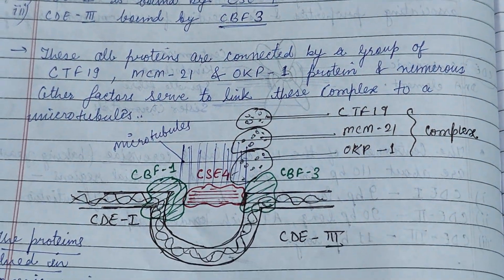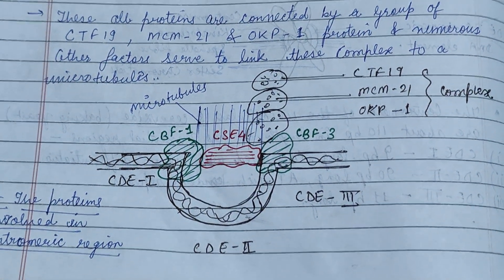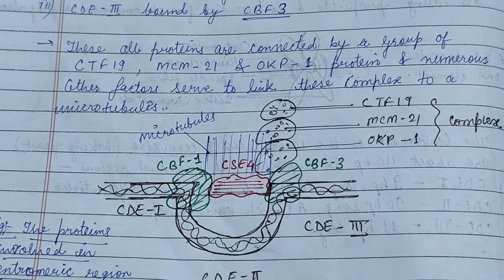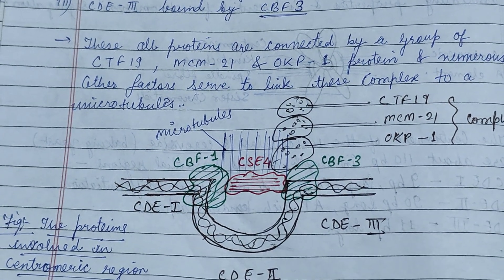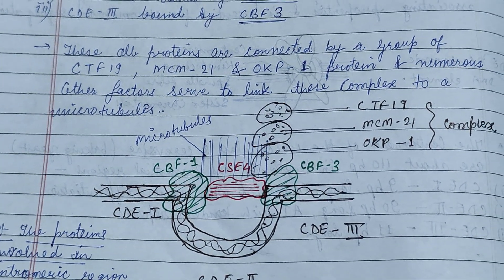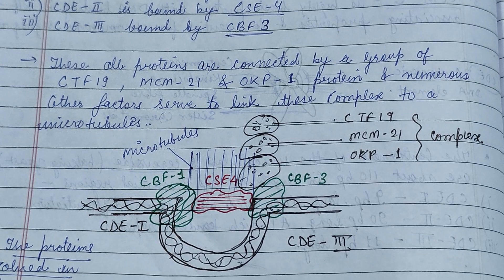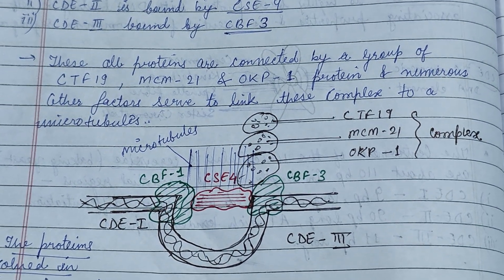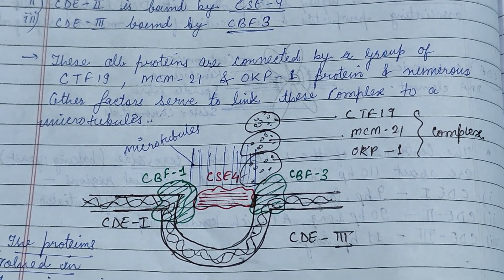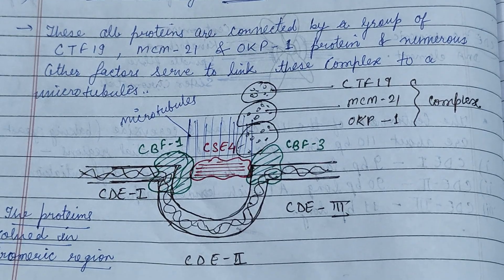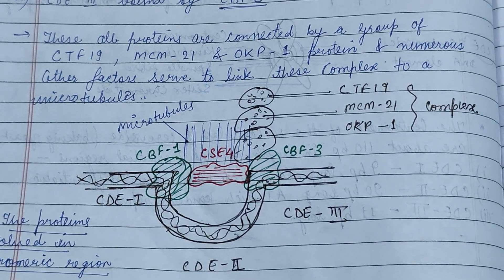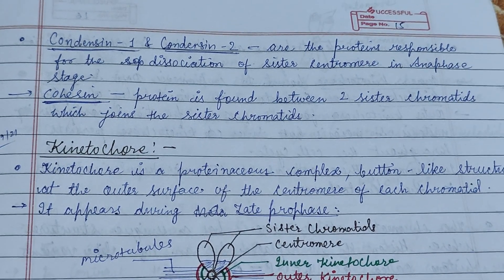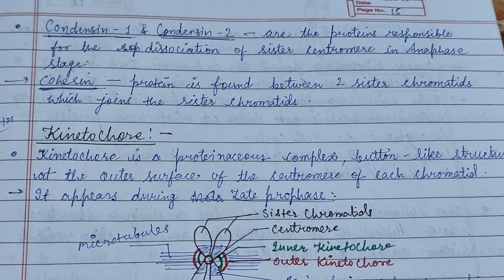The proteins involved in the centromeric regions include CDF19, MCM21, and OKP1, which are all complex proteins involved in the formation of CDE2. Condensin 1, condensin 2, and cohesin are important proteins responsible for the association and dissociation of the chromatids.